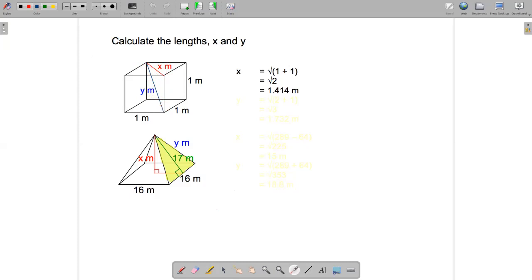So y squared will be equal to x squared plus 1 squared. But x, remember, was root 2. So if I square x, I'll get 2. So y squared is equal to 2 plus 1 squared, 2 plus 1. So y squared is equal to 3. So y is equal to the square root of 3. And that comes to 1.732.